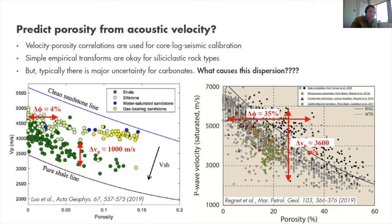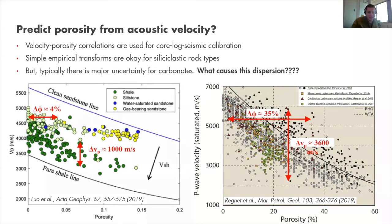In a paper by Law et al. (2019), for shales and sandstones, the variation for a single porosity is up to about 1000 meters per second — which sounds bad but is quite good and can be fit reasonably well with a simple transform. However, comparing with carbonates, the scatter is much worse. For a single porosity, the P-wave velocity may range up to 3600 meters per second, introducing major uncertainty for seismic inversions and offering major challenges for exploration and development.